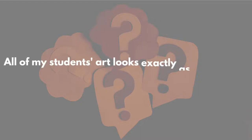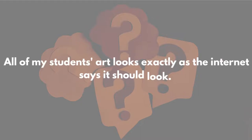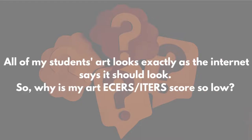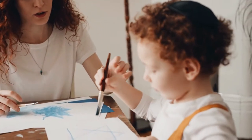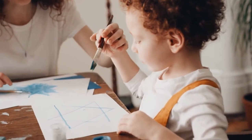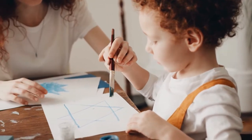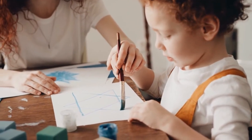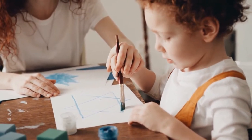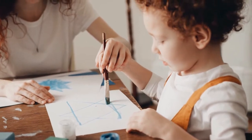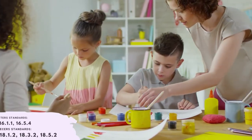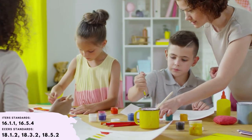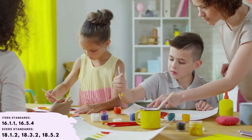All my students' art looks exactly as the internet says it should look, so why is my ECERS or ITERS score so low? There are a few reasons why one's ECERS or ITERS score might be low. However, if children's art looks like the result of a project found online from a place like Pinterest or YouTube, there's a high chance that the art may be more focused on what the end product looks like rather than the child's process in creating it.